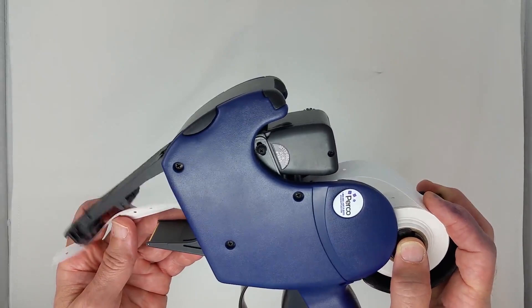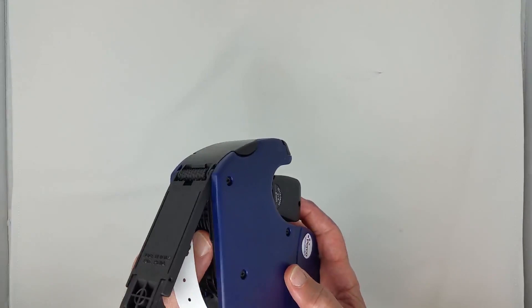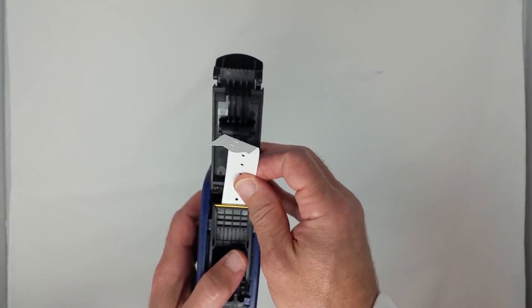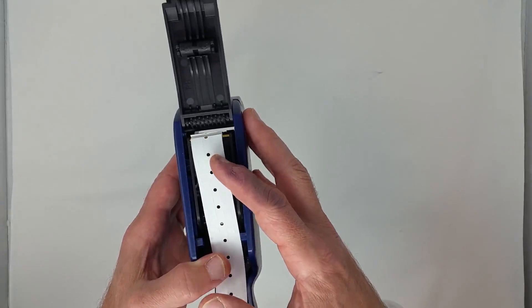Turn the gun over. Close the inner base plate making sure that the labels are centered. Pull the labels across and close the outer base plate. The labels should be in the center of the plastic teeth. Your gun is now loaded.